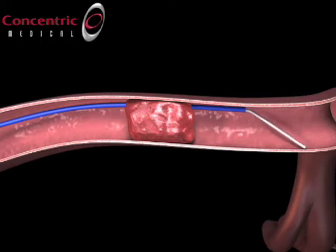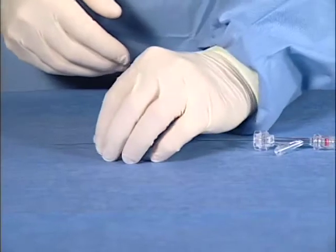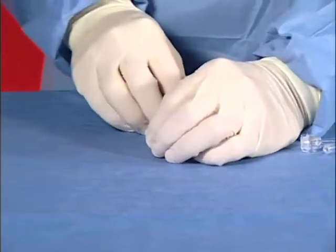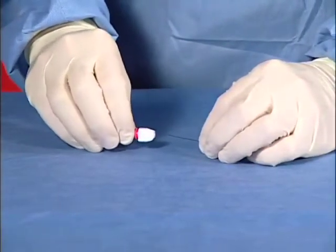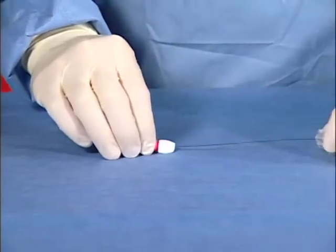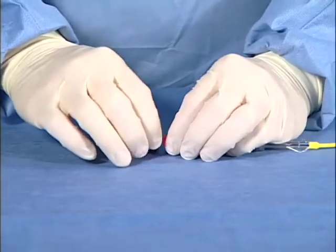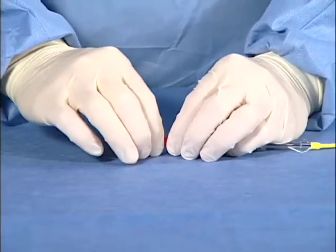Deploy the Mercy Retriever distal to the clot. Once deployed, pull tension on the retriever and microcatheter to engage the distal face of the clot. Place the locking torque device onto the proximal end of the Mercy Retriever and advance it to the RHV of the microcatheter prior to locking it in place.